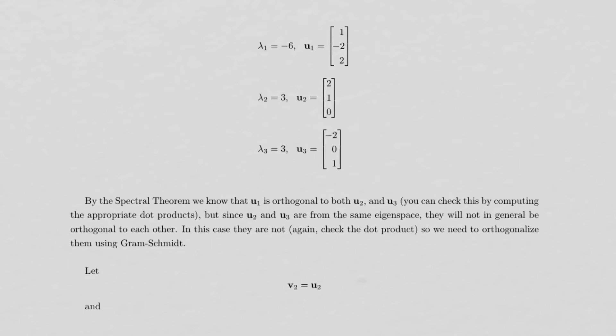And if we just wanted to diagonalize A, we could take these, put them into the matrix P and put the corresponding eigenvalues into the diagonal matrix D and we'd be done. But what we need to do is make sure that these give us an orthogonal set.